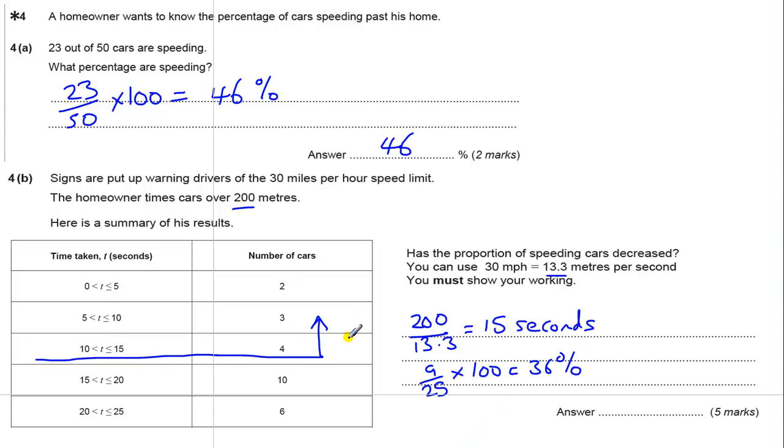So 36% of our people speeding. There was 46% speeding before, so the speeding is reduced. And therefore, the answer is, has the proportion of cars been decreased? The answer is yes. You could put a little bit more work in there to explain that, but essentially that's the idea. It's been reduced, so it's yes.